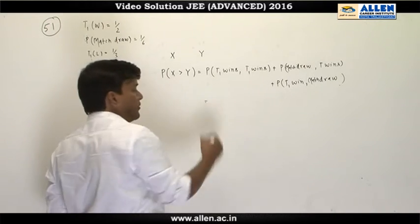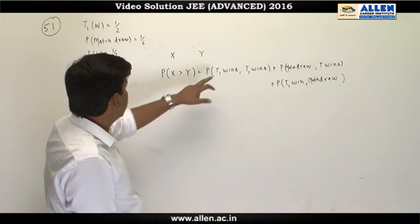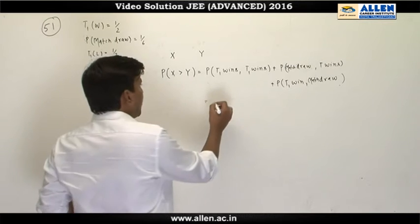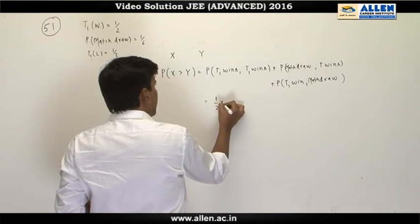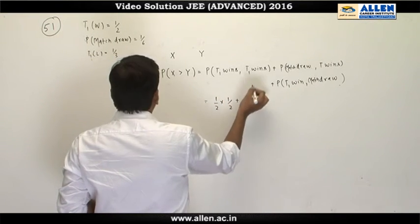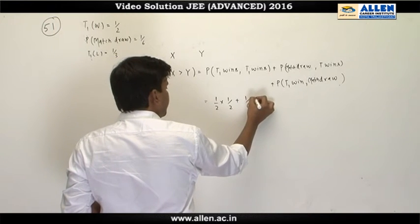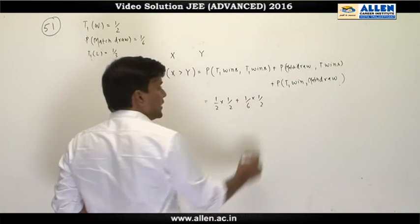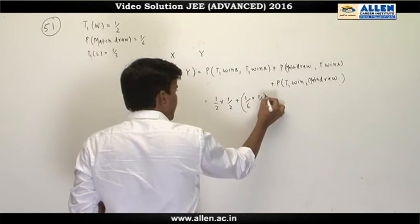So the two games are given to be independent in the paragraph. So if T1 wins, the probability is half into half. For the match to be drawn, this is 1 by 6 into half, and same is the case with this. So we can multiply this by 2.